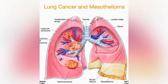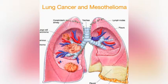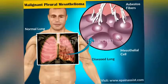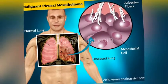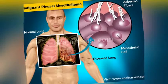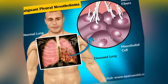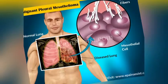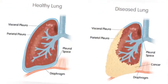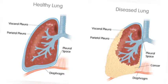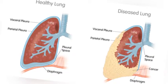Mesothelioma that affects the pleura can cause these signs and symptoms. Generally, a biopsy is needed to confirm a diagnosis of malignant mesothelioma. A doctor removes a sample of tissue for examination under a microscope by a pathologist. A biopsy may be done in different ways, depending on where the abnormal area is located. If the cancer is in the chest, the doctor may perform a thoracoscopy.